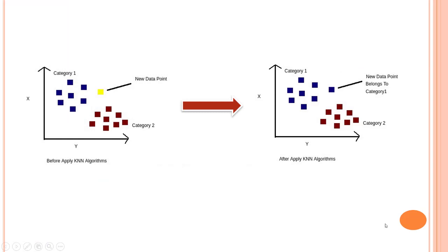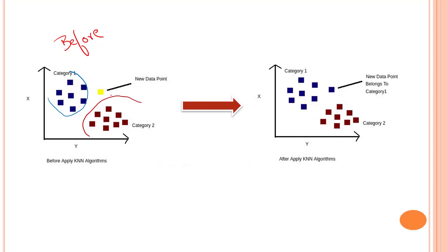From the name itself you can denote that 'nearest neighbor' — this algorithm is completely based on the nearest neighbor. We have a data point and depending upon the number of nearest neighbors, it is able to verify the category. So what I mean by this is: this is how the before picture looks like, before applying the algorithm. We have category one — circle it out with a different color tone — and then we have a different category. We have two different classes.